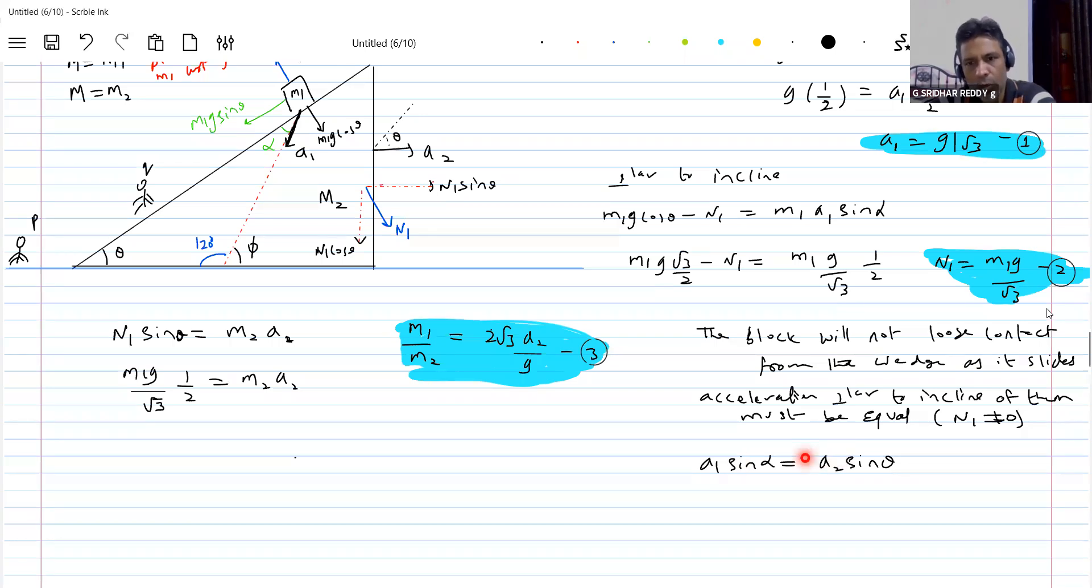I think now, do we know A1? Yes, we know A1. Substituting that, A1 is how much? G by root 3. Sine alpha, alpha is 30 degrees, so 1 by 2. A2, this will be 1 by 2. So what is A2 equal to? G by root 3. So the equation, substituting equation 4 in 3 will get the required answer. M1 by M2 should be equal to 2.